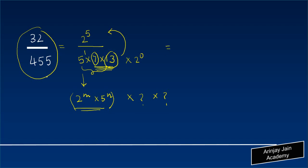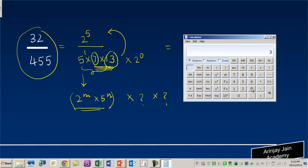This means that when we do a division for these two numbers, it is not going to be a terminating decimal expansion. I can show you through the calculator: 32 divided by 455 gives a non-terminating decimal expansion. What is repeating itself is 7, 0, 3, 2, 9, 6 — repeating again and again — so this is a non-terminating decimal expansion.